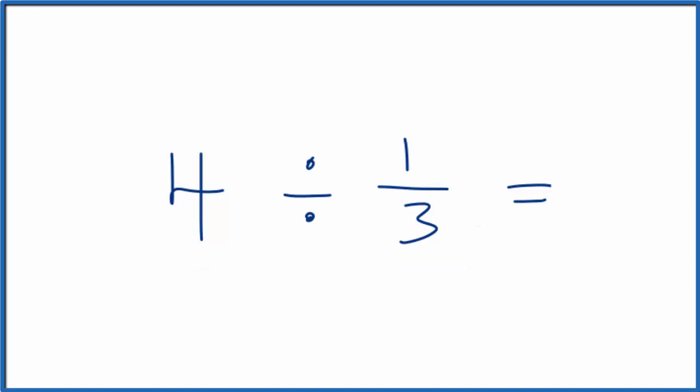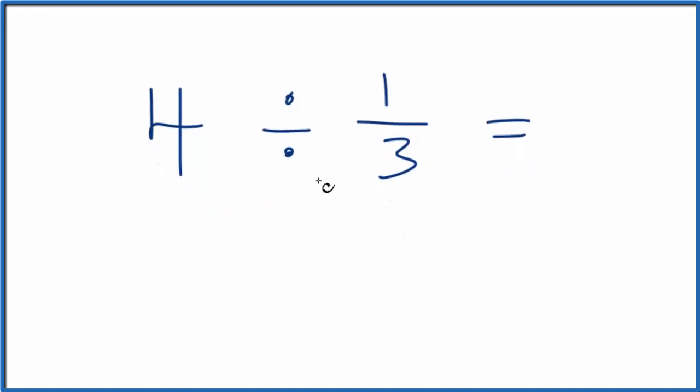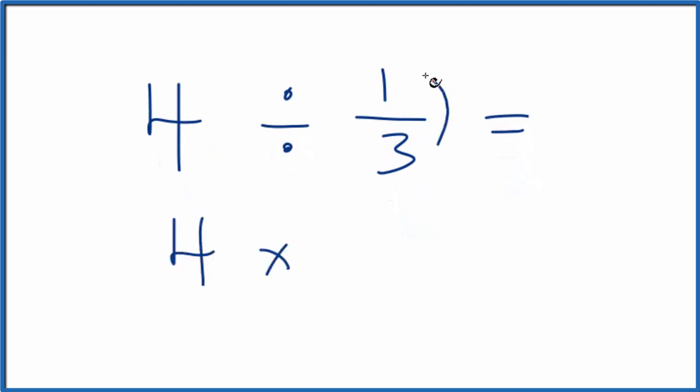Probably the quickest way to think about this is instead of four divided by one over three, we could call it four times, and we're going to take the reciprocal of one over three. So we're going to flip the one and the three. We end up three over one. So we changed the division to multiplication, and then we took the reciprocal of one-third.